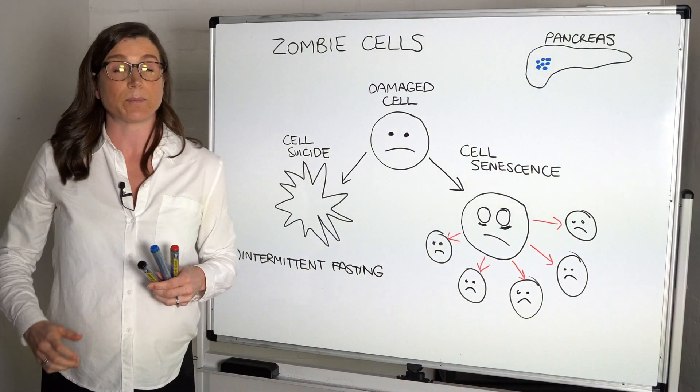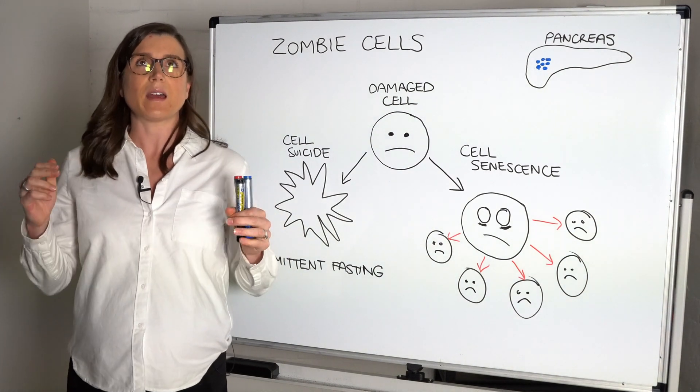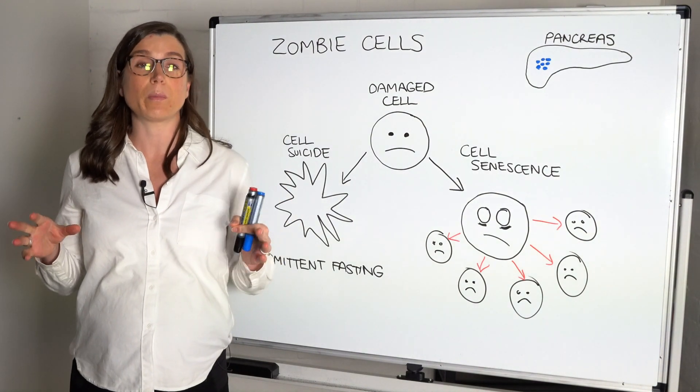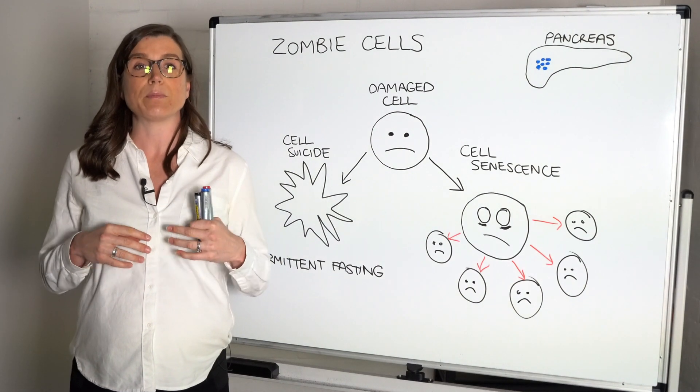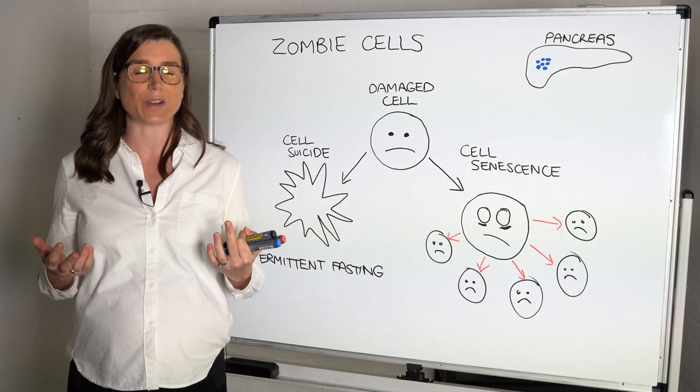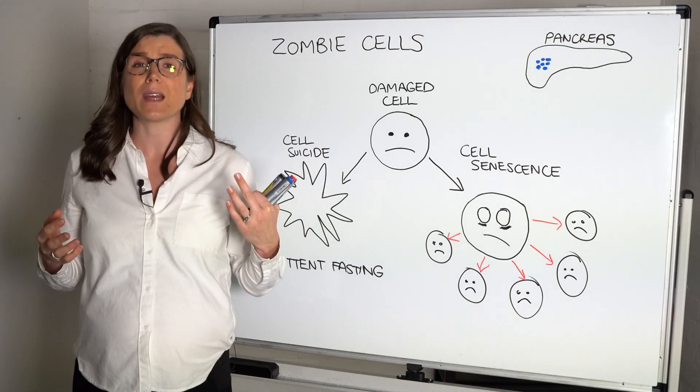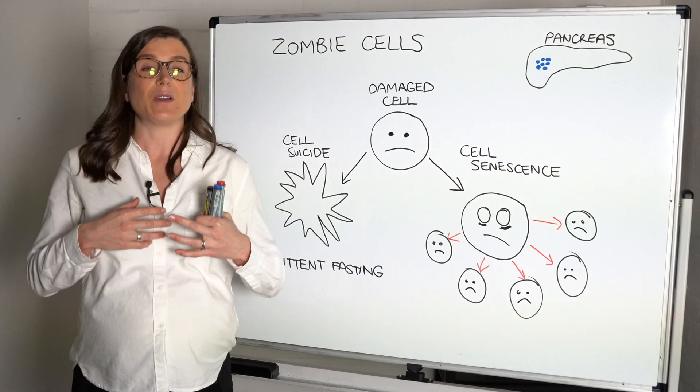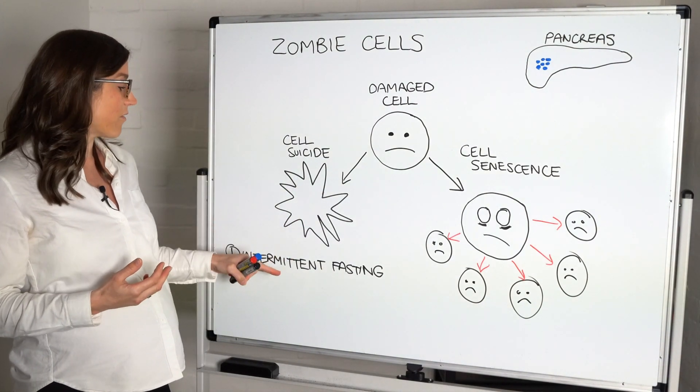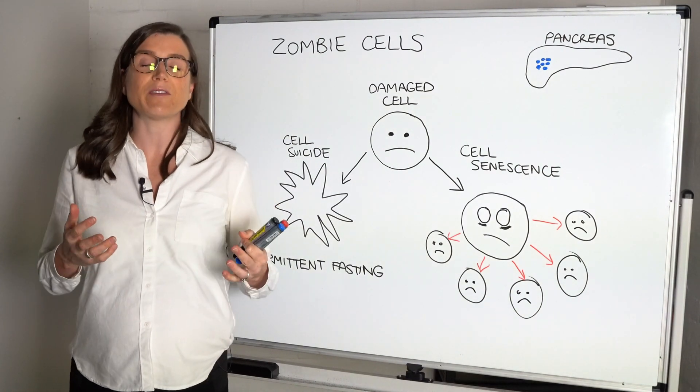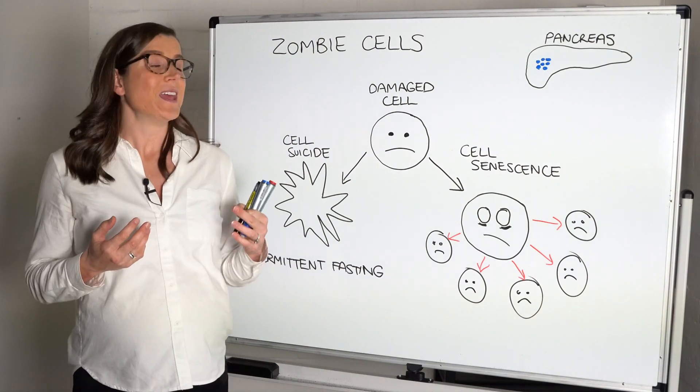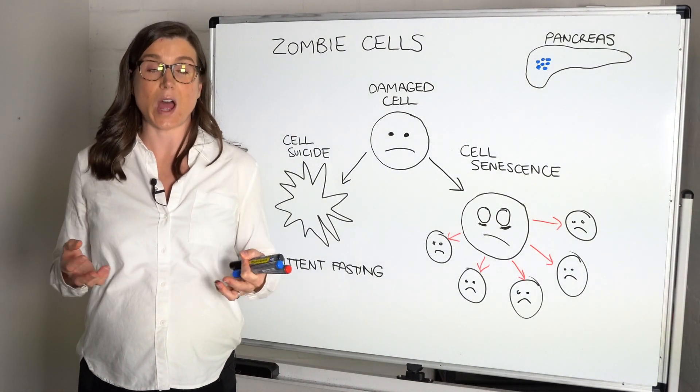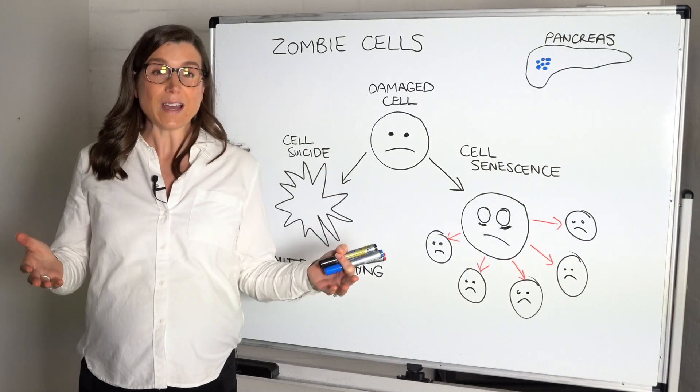So one way is intermittent fasting. Intermittent fasting—it's not the same as just skipping breakfast. Intermittent fasting is when you're going for a prolonged period of time without food or at least no calories. So that would just be drinking water and non-caloric drinks, for example. And that would have to be at least 24 hours or more to start seeing these effects. We don't know exactly what the ideal time is, depending on what you're trying to achieve. But we have found that intermittent fasting promotes what we call autophagy.